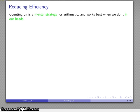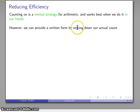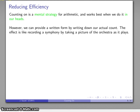Let's talk about reducing efficiency. Counting on is a mental strategy for arithmetic and it works best when we do it in our heads. The important thing is that it's a mental strategy. We can try to write it down, but keep in mind that you're trying to record a mental strategy by writing it down. The effect is something like recording a symphony by taking a picture of the orchestra. You might not get a good idea of what's really going on, and it's certainly not the best way to hear the music.